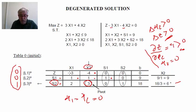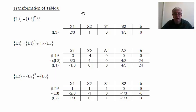We identify element 3 as the pivot. We need to transform the table so that the column of x2 becomes a unit vector with the appropriate configuration. We number the lines: the line of z is L1, the first restriction is L2, and the third restriction is L3. We use a superscript 0 to indicate the previous table, and we will show how to obtain the new table in the next slides.